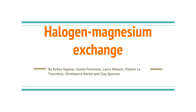Our reaction is the halogen-magnesium exchange. In this reaction, an alkyl halide and an alkyl magnesium halide come together to form a new alkyl halide and another alkyl magnesium halide. Essentially, the magnesium allows for the formation of new alkyl halides by exchanging the halogen-magnesium groups. It's really similar to the Grignard reaction, which uses lithium metal in place of magnesium, but magnesium is more useful in some reactions.